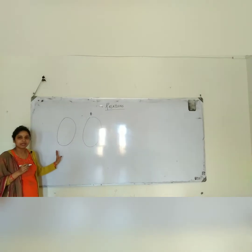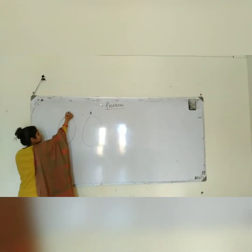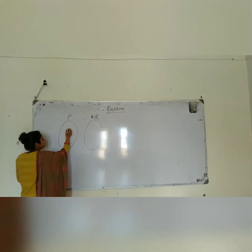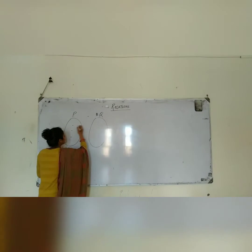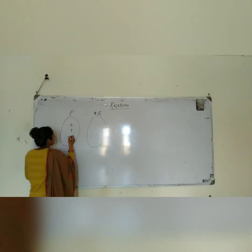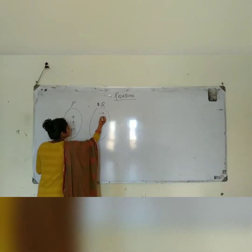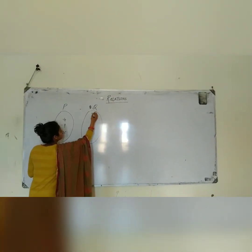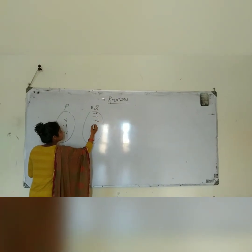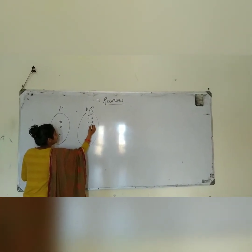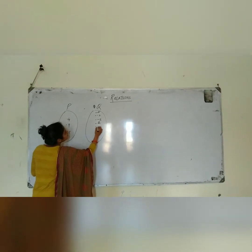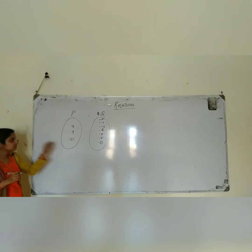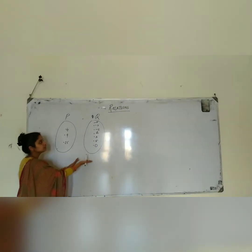Suppose we are given a diagram where this is the set P and this is the set Q. The elements of set P are 4, 9, and 25. The elements of set Q are minus 2, minus 5, minus 8, minus 2, plus 2, plus 3, plus 5, and 3.